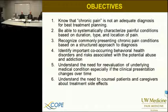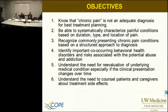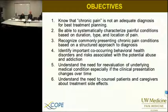Six objectives very briefly: diagnosis of chronic pain is not an adequate diagnosis for treatment planning. We will review and be able to systematically characterize painful conditions based on duration, type, and location. Recognize commonly presenting chronic pain conditions following a structured approach to diagnosis. And as ever important — there are often very important co-occurring behavioral health disorders and predictors that may speak to potential abuse and addiction. If clinical presentation changes, we need to do a reevaluation, and there is the need to counsel patients and caregivers about treatment side effects.